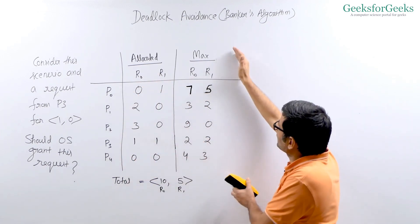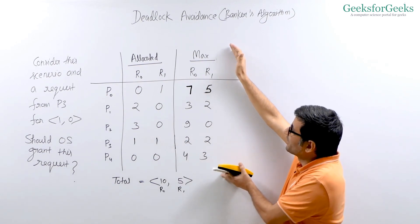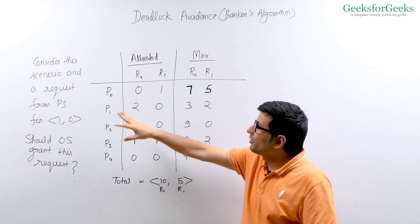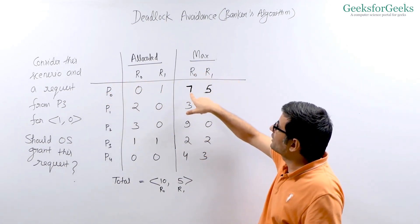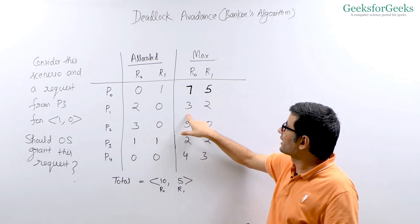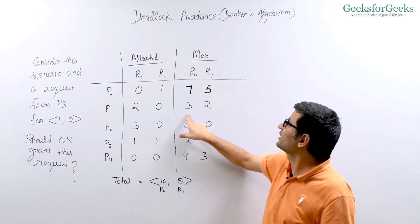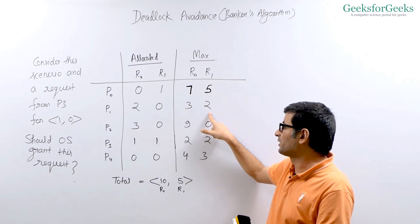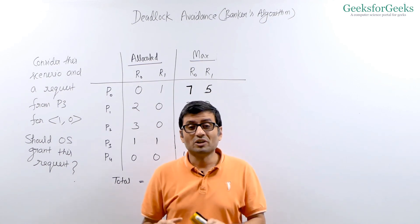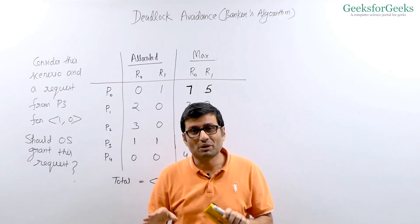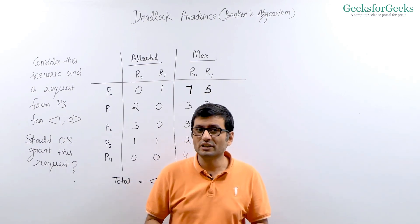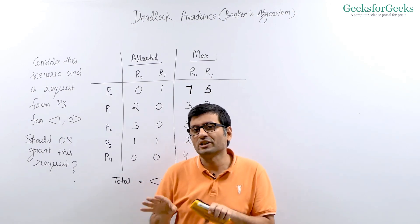These processes have also declared their maximum need. P0 has declared it's never going to take more than seven instances of R0 and five instances of R1. P1 has declared it will never take more than three instances of R0 and two instances of R1. We are making an assumption that every process declares its maximum need — it might not be possible practically, but this is the assumption on which the Banker's Algorithm for deadlock avoidance works.